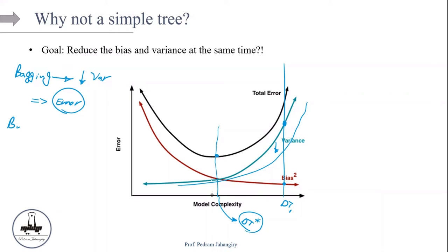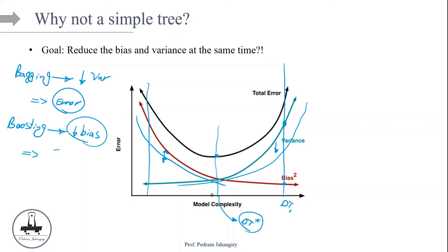For boosting, however, the goal is to reduce the bias. In boosting, we start with a very small tree — actually, we combine lots of small trees together. The idea is that the variance is already small, and we want to see if we can reduce the bias — the entire bias curve for different complexity levels of the model. I want you to pay attention that the focus of bagging and boosting is different: in bagging, we reduce the model variance; in boosting, the algorithm tries to reduce the model bias. But overall, both of them are going to outperform decision trees by a large margin.